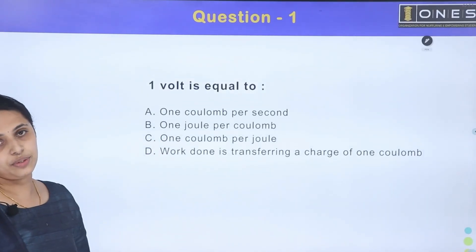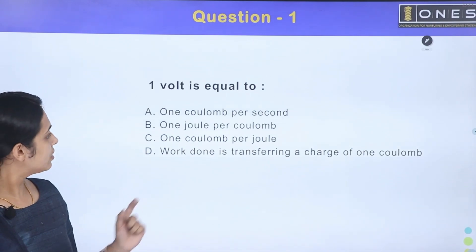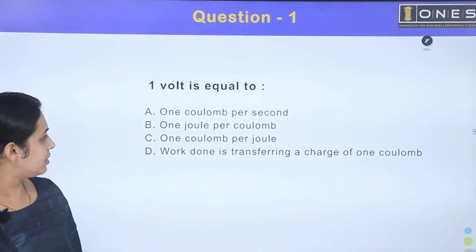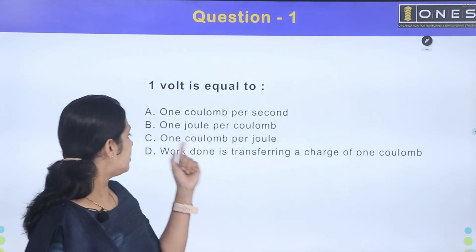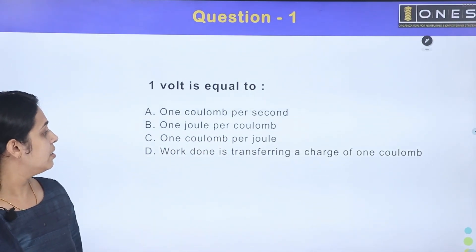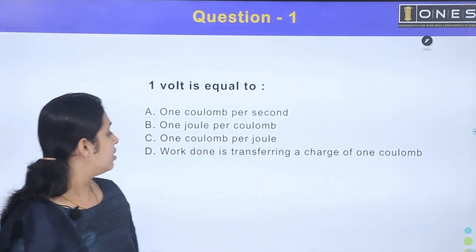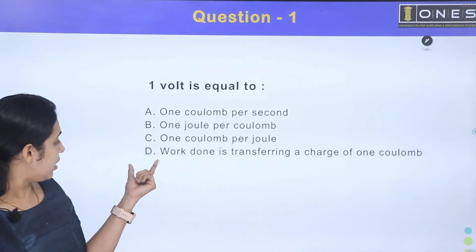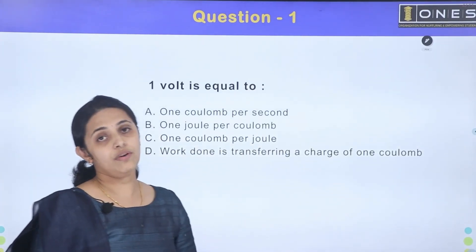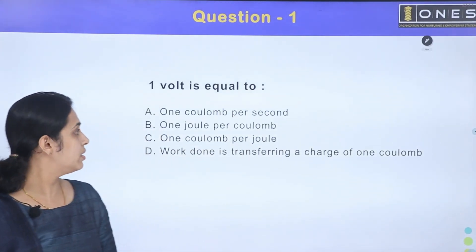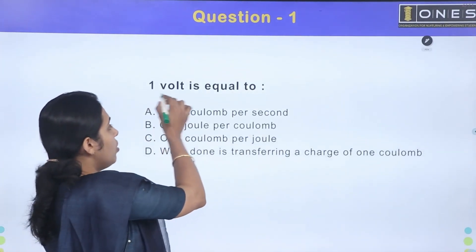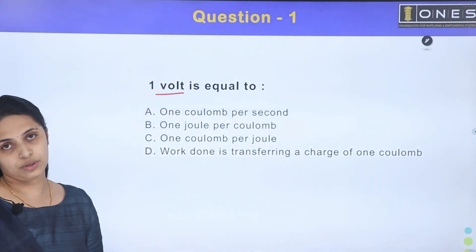1 volt is equal to — option: 1 coulomb per second, 1 joule per second, 1 coulomb per joule, and the last option: work done in transferring a charge of 1 coulomb.